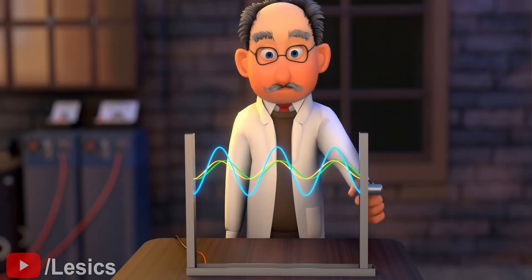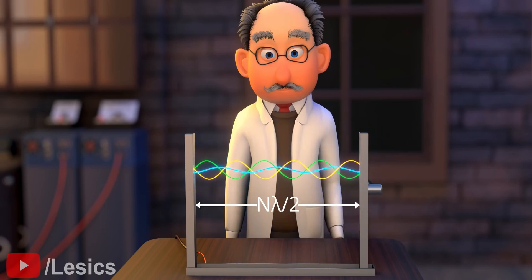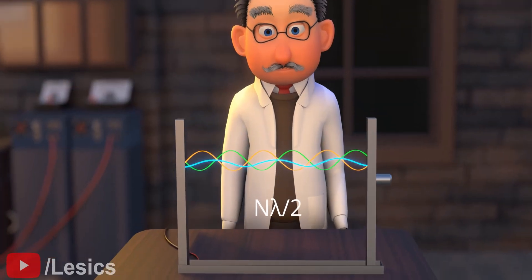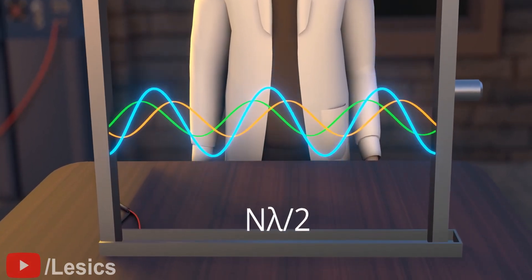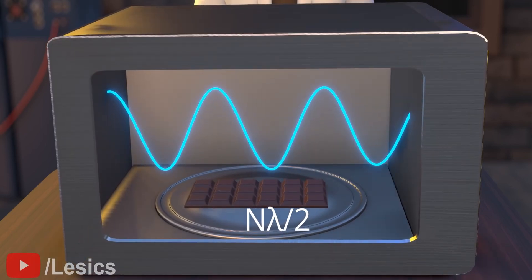This is a well-known fact. The standing waves get produced when the distance between the source and reflector is an integer multiple of half wavelength. Thus, the dimensions of the closed structure are determined by the wavelength of these waves. Now, a fun fact. Just measure the cavity length of the microwave oven in your kitchen. It will be an integer multiple of this wavelength.